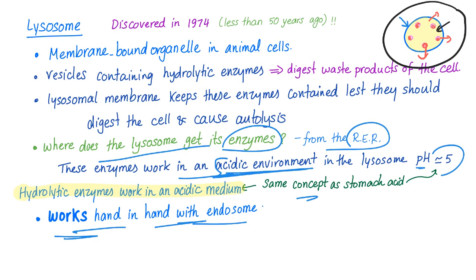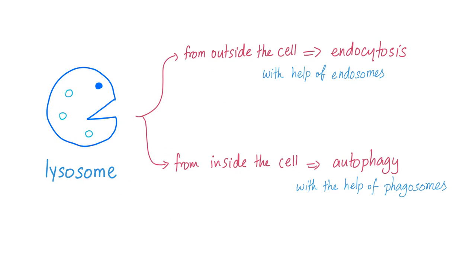Lysosome works hand in hand with something called an endosome, another fancy organelle. Lysosome can digest stuff coming from outside of the cell — this is called endocytosis, with the help of the endosome, the delivery guy. Or it can digest stuff from within the cell — this is called autophagy, and we need the help of the phagosome.